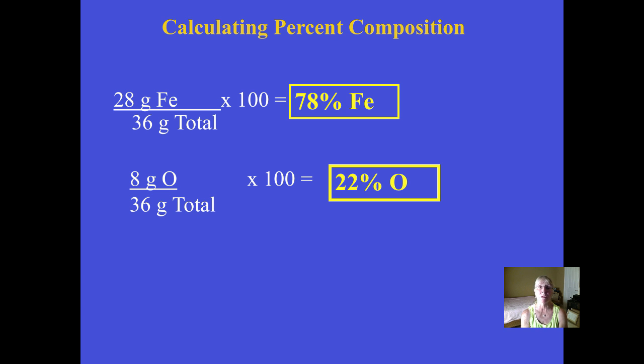You change it into a percentage by multiplying by 100 or use the shortcut and just move the decimal point over two places. So we have 78 percent iron and 22 percent oxygen.